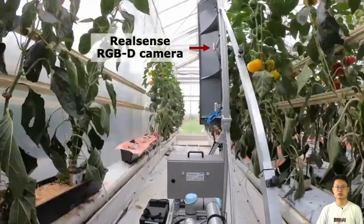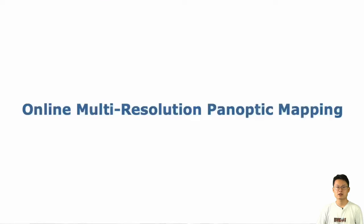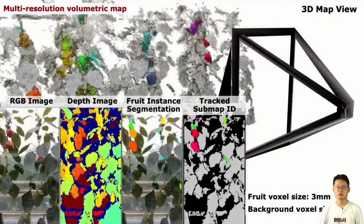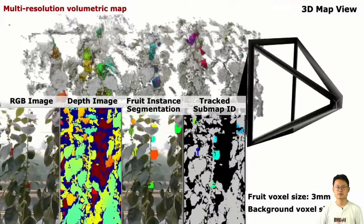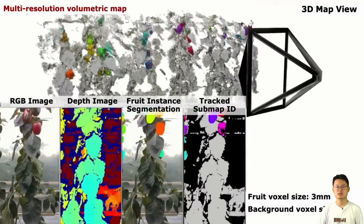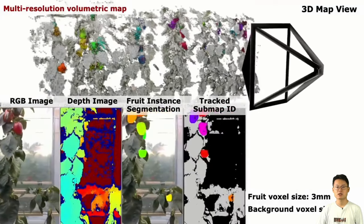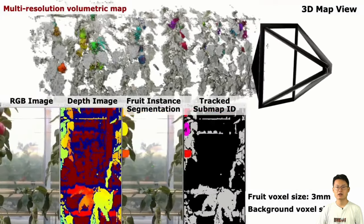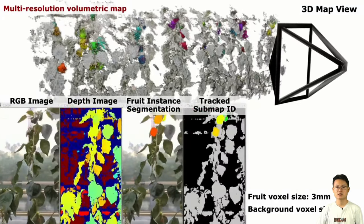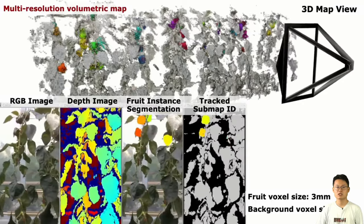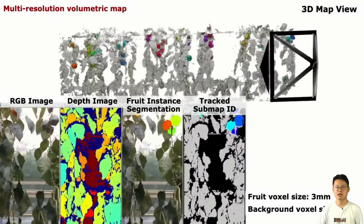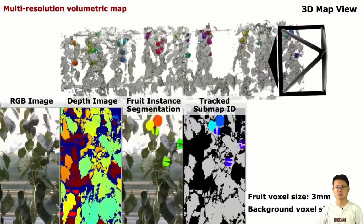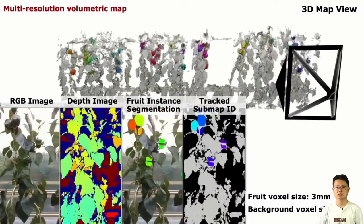As you can see in this video, the panoptic map can be built online while the robot is moving in the greenhouse. To balance the mapping quality and efficiency, we assign a higher resolution to the fruit semantic maps with 3 mm voxel size and lower resolution to the plant background with 1 cm voxel size.